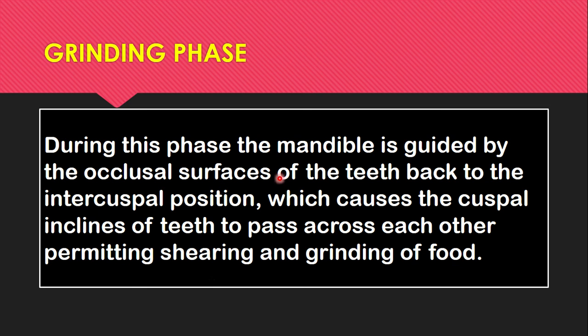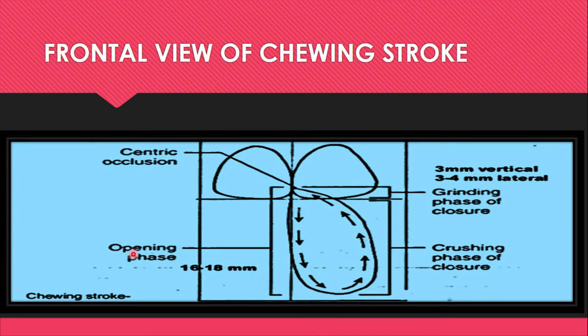During the grinding phase, the mandible carries the occlusal surfaces of the teeth back to the intercuspal position, which causes the cuspal inclines of the teeth to pass across each other, permitting shearing and grinding of the food. This is the frontal view of the chewing strokes recording a tear-shaped movement pattern. In good occlusion we have predominantly vertical chewing strokes; in bruxism we have broader chewing strokes; and in malocclusion we have irregular and less repeatable chewing strokes.